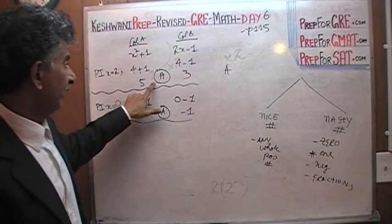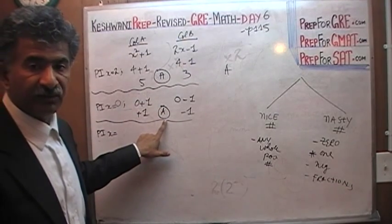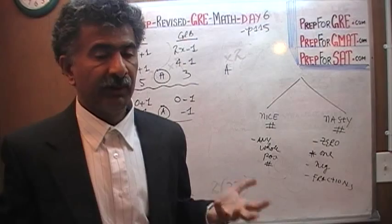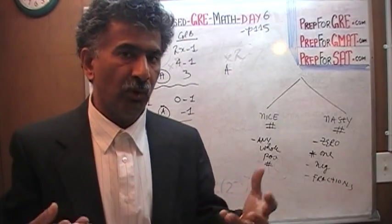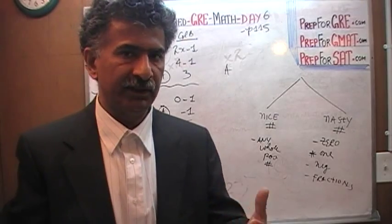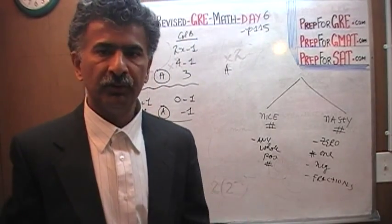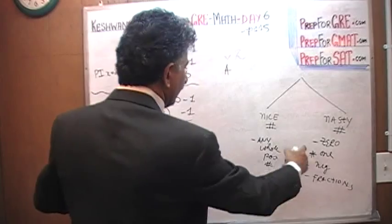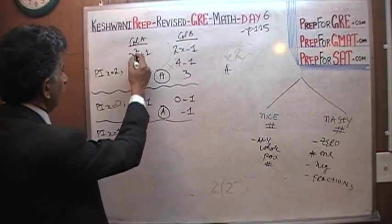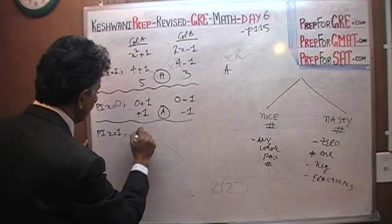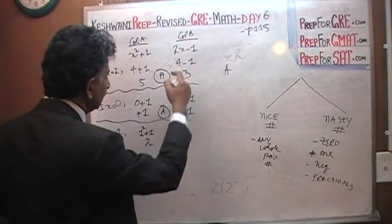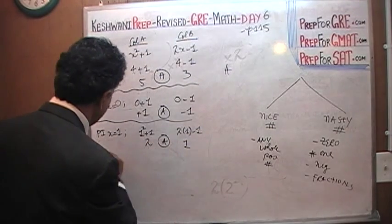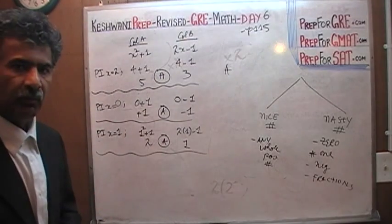Because the answer did not change — we got A the first time and A the second time. At this point it is your call; if you have the time, plug in one more time. I always plug in a third time; it only takes a few seconds. The reason it's taking so long in the video is because I'm explaining every excruciating detail, but once you get to know it, it only takes seconds. So let's try x equal to one. x squared is one, one plus one is two. Two times one is two, minus one is one. The answer is again A.